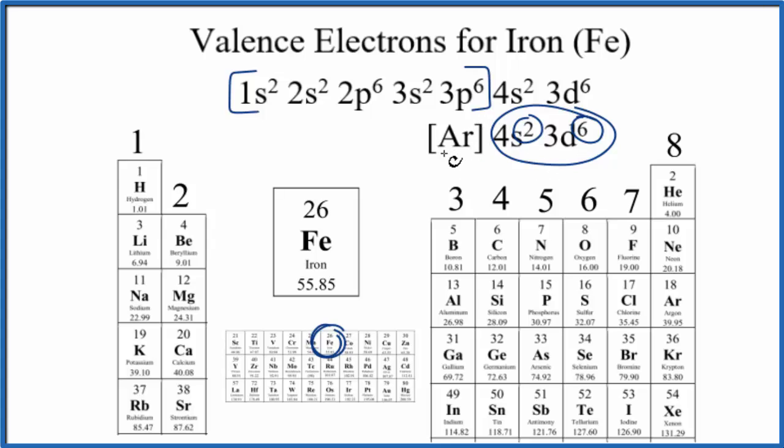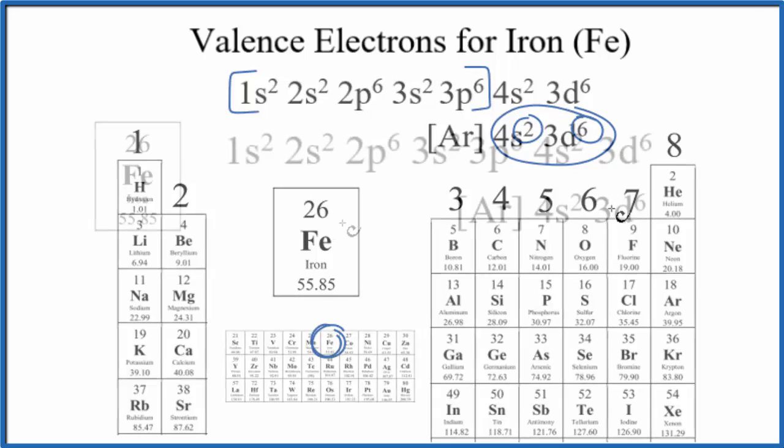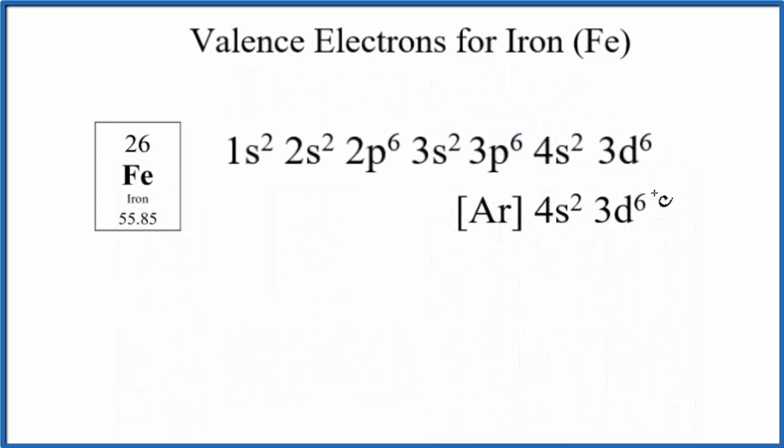Let's look briefly at how iron uses these valence electrons to form chemical bonds. Iron has 8 valence electrons, but it doesn't have to use all of these valence electrons to form chemical bonds. Typically, iron will form Fe2+. This is the iron 2 ion. It will lose these two valence electrons here in the s orbital.